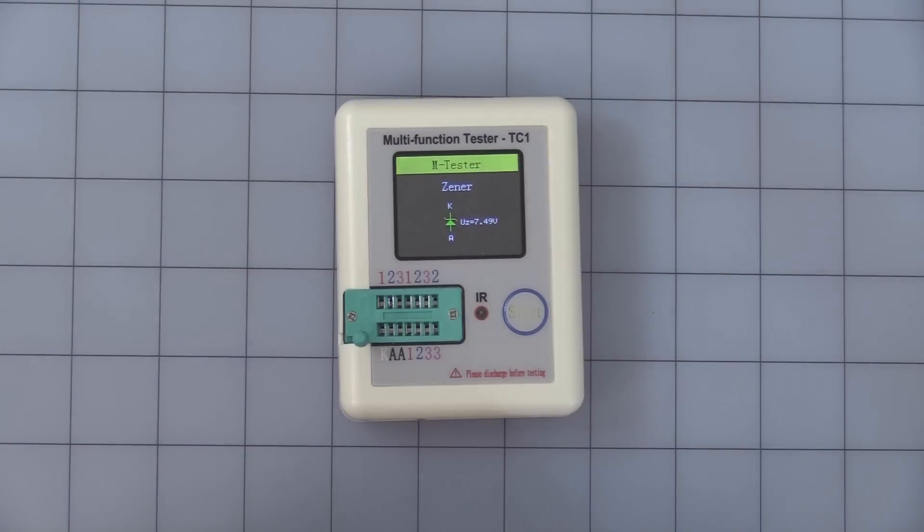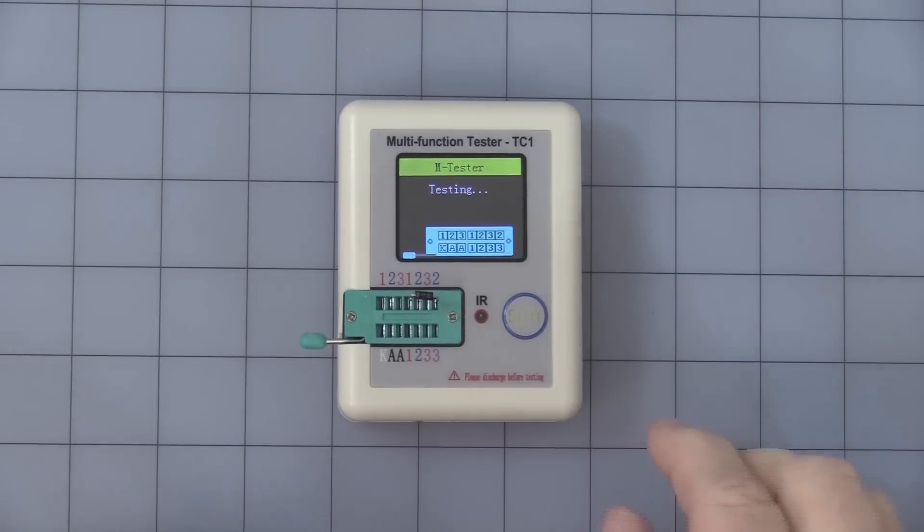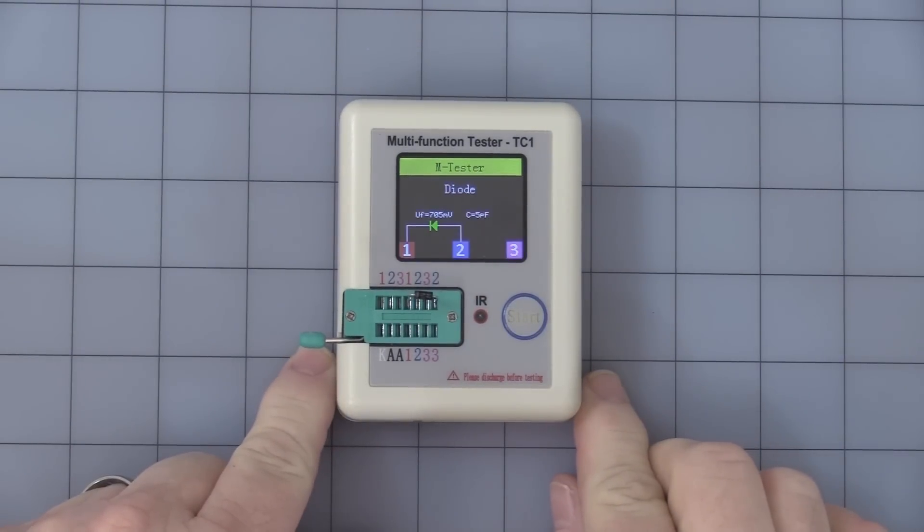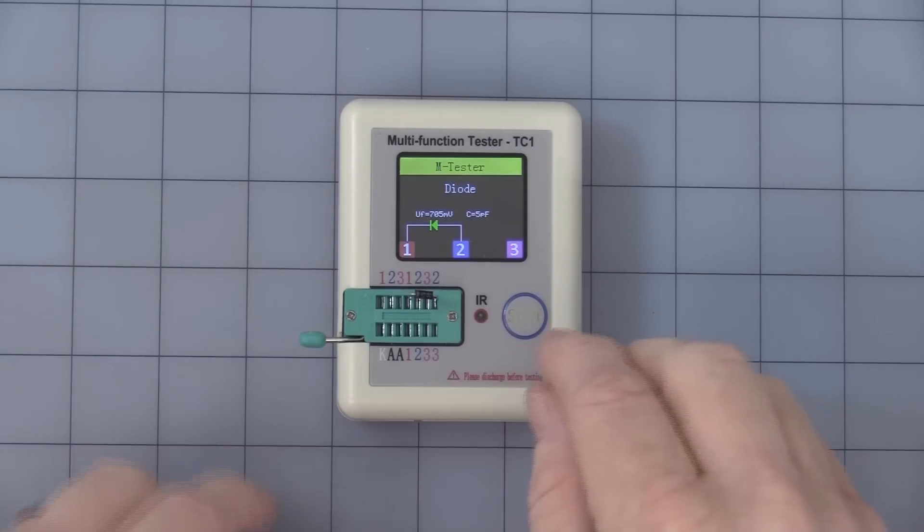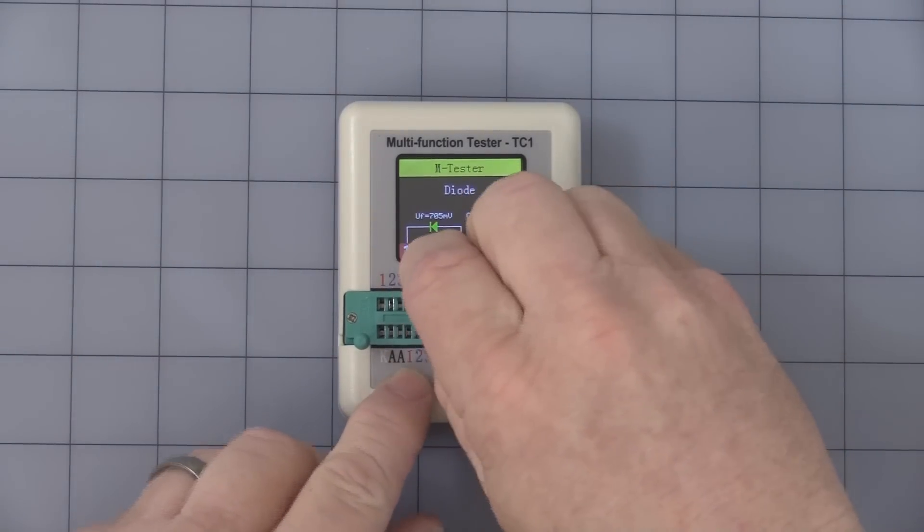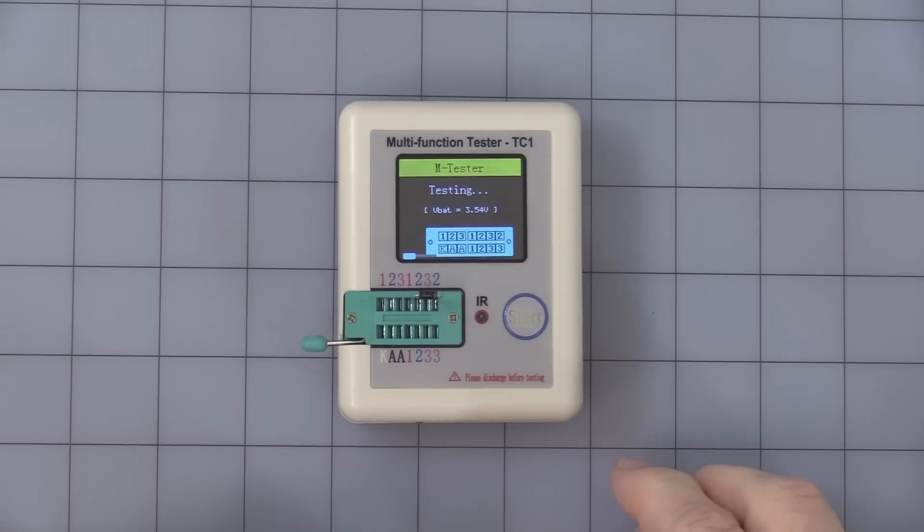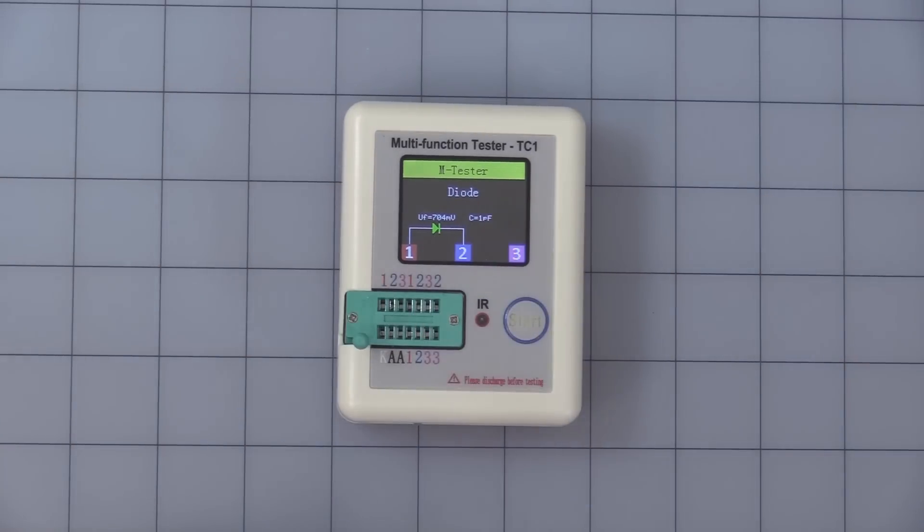Next one would be just a standard 1N4007. Stick it in there, press test. There you go, tells you the voltage drop there because that's the diode. Now the numbers that are displayed here, 1, 2, 3, are all reference to how you have the part turned in here. If I turn this part around, now you see it's pointing the other direction. So these numbers are strictly reference to how you have the part plugged into it.